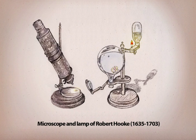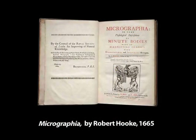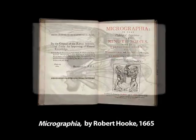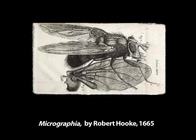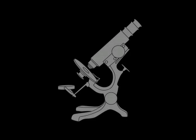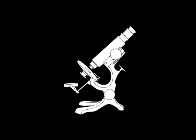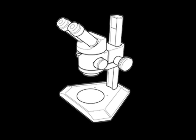In the 1600s, Robert Hooke used this microscope. In 1665, he published a book that showed the world organisms and details that had never been seen before. Over the last four centuries, many improvements have been made to light microscopes, but the main principles have remained the same.